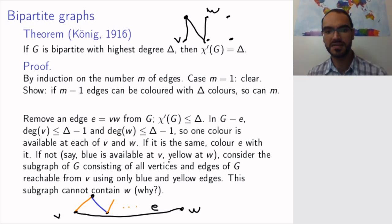But we said that yellow was available at w. So w has no yellow edges arriving into it. This gives us a contradiction. So all this to say, starting from v, if you just look at the subgraph of everything that is reachable on just blue and yellow edges, you're not going to get to w.